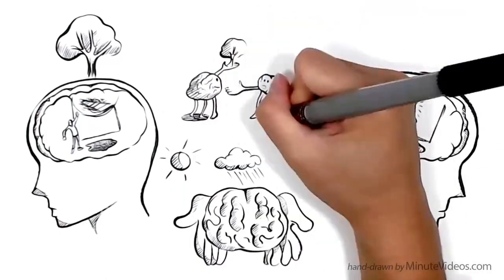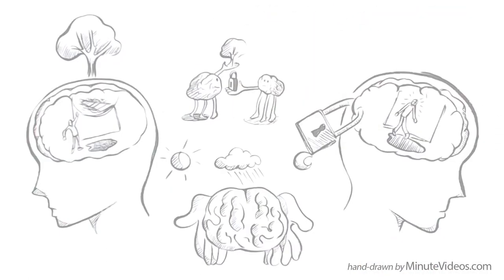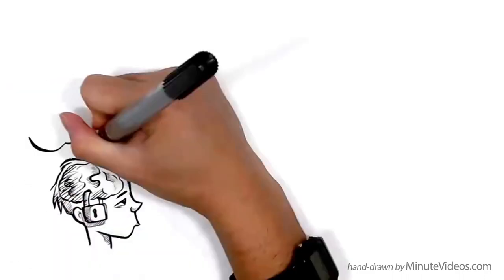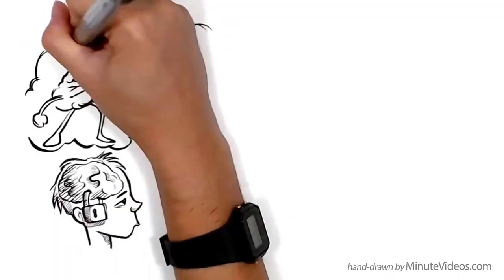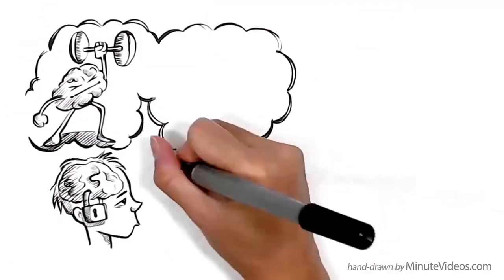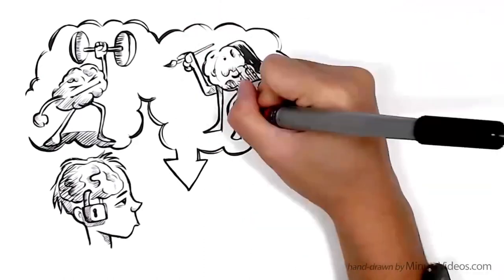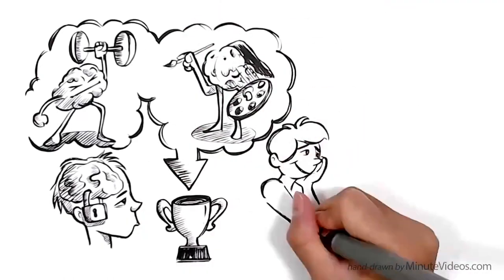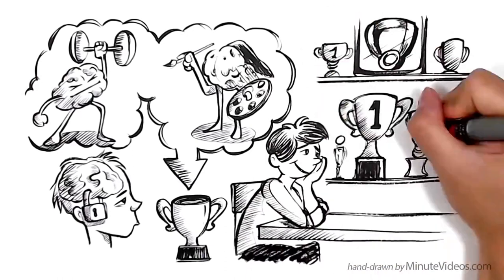Sometimes we like to switch from one to the other. People have a fixed mindset because they believe that basic qualities, like intelligence or talents, are fixed traits, and that these traits are responsible for success. They often like to document past achievements.